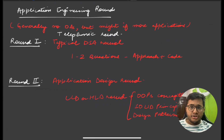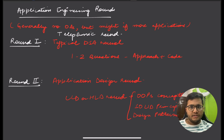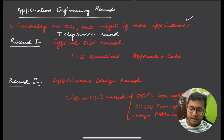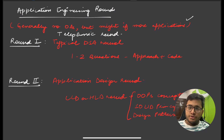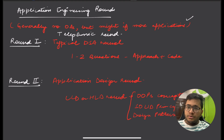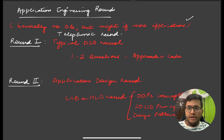For the Application Engineering role, there are generally no online assessments, but if the number of applications increases significantly, they can conduct an online challenge — something like a test on HackerEarth with three questions to be attempted in 90 minutes, roughly 30 minutes per question. This only happens if the number of applications is very large.